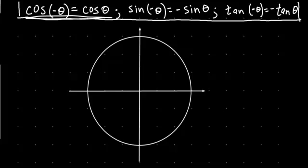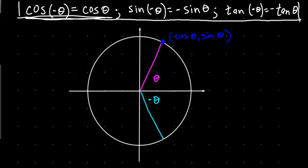Let's take an arbitrary angle theta — there's my radius, and there is theta. If that's theta, let's look at negative theta, which would be down in here. We have the point (cosine theta, sine theta) up here, and directly below, just by the negative theta, we see the point (cosine of negative theta, sine of negative theta).